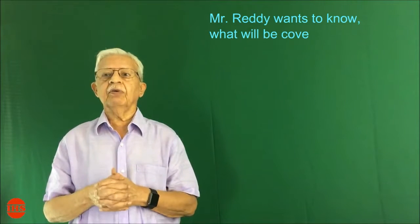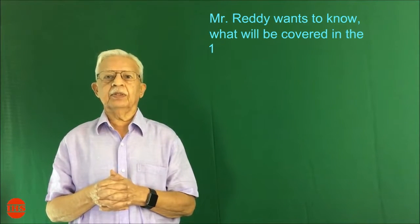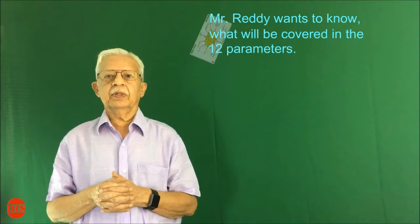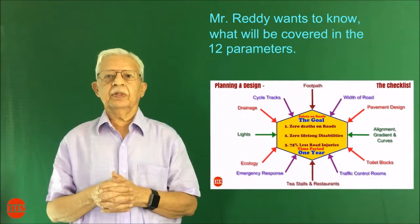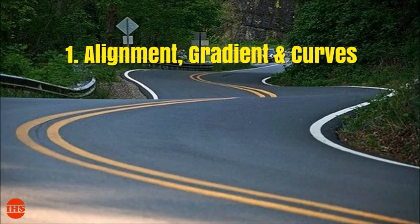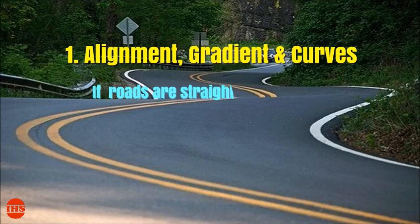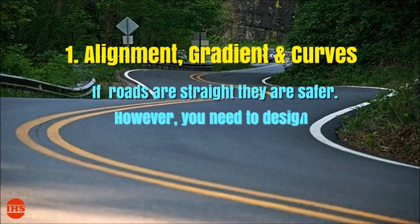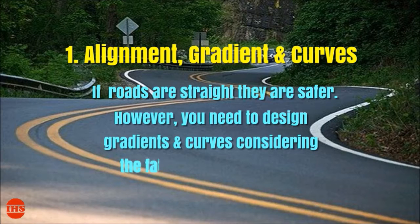Mr. Reddy wants to know what will be covered in the 12 parameters. Alignment, Gradient and Curves: if roads are straight, they are safer. However, you need to design gradients and curves considering the fatal accidents caused.